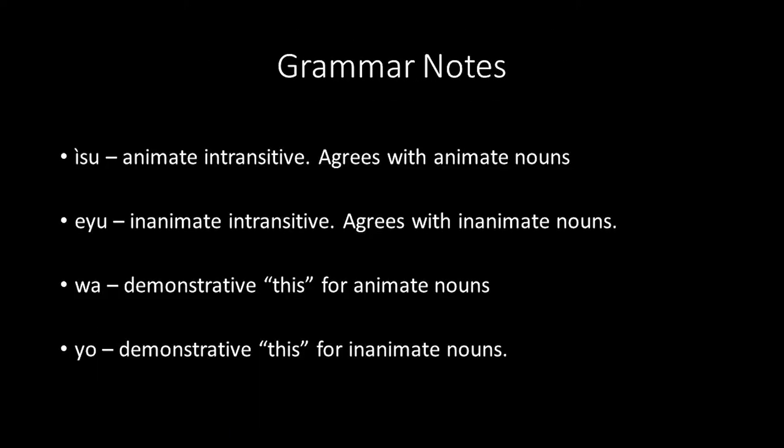As you probably noticed, the endings for the colors change according to whether the noun is animate or inanimate. The ending -isu is the animate intransitive and agrees with animate nouns. The ending -ii is inanimate intransitive and agrees with inanimate nouns. We have introduced here two demonstratives: wa is 'this' for animate nouns, and yo is 'this' for inanimate nouns.